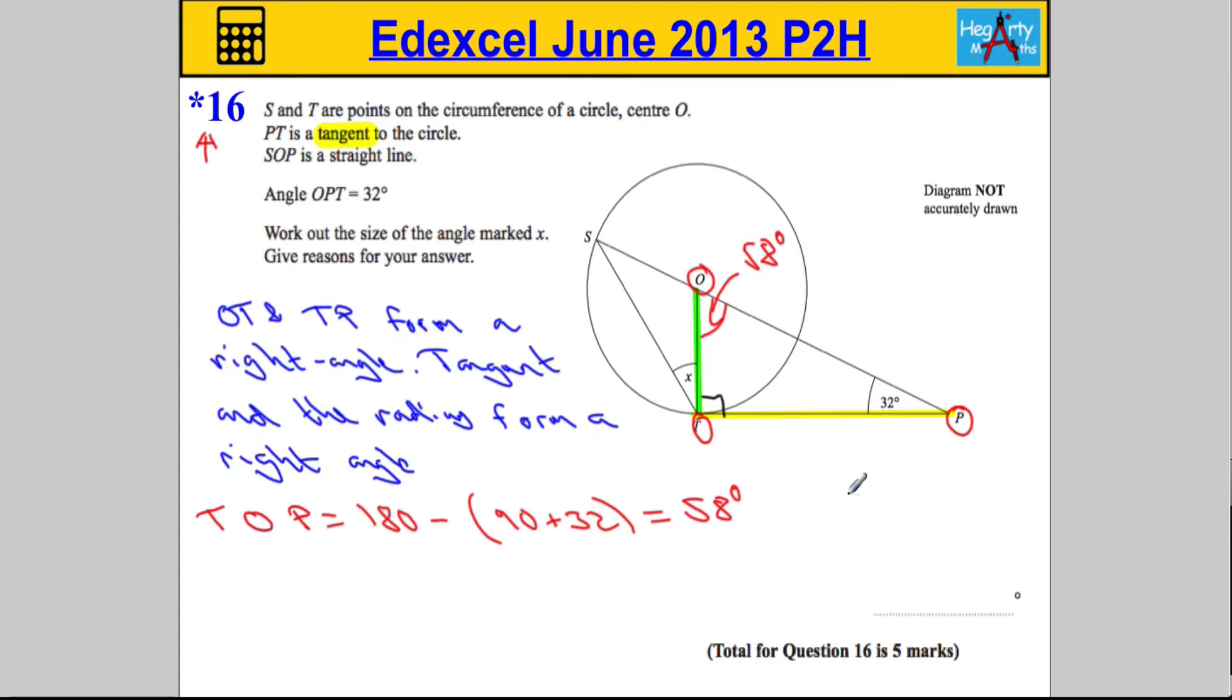Now the reason here, fairly straightforward, is that the angles in a triangle add to 180, or sum up to 180.